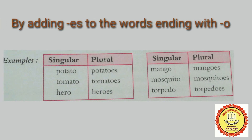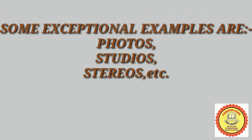The other rule is: add ES to words ending with O — agar shabdo ke anta mein O hai, toh we will add ES. For example: potatoes, tomatoes, mangoes, etc. However, there are some exceptions. For example, photos and studios — here we add only S.